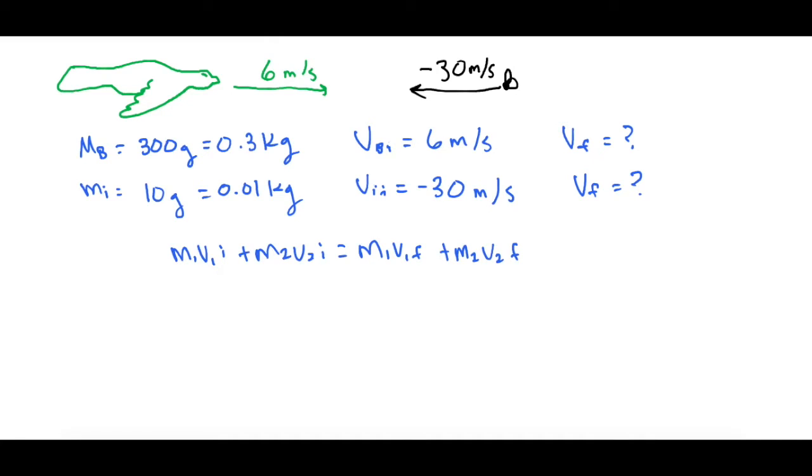But we were just talking about how the masses of them at the end are combined. So really we can rewrite this as m1v1 initial plus m2v2 initial equals now m3v3 final.